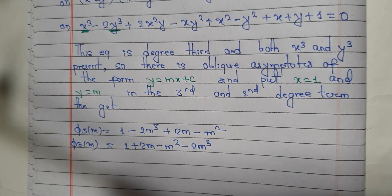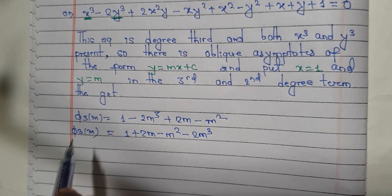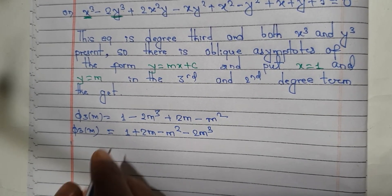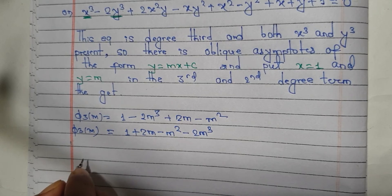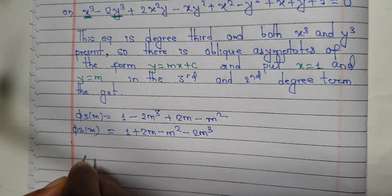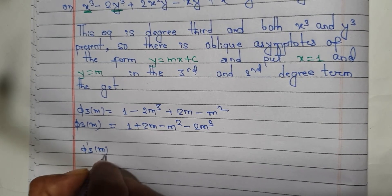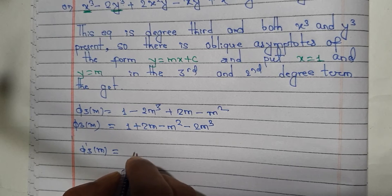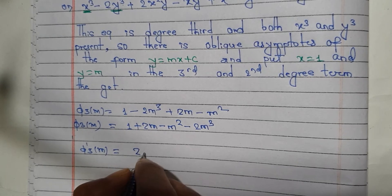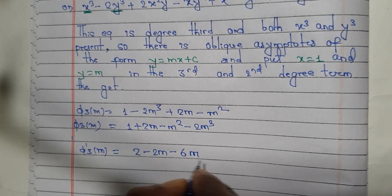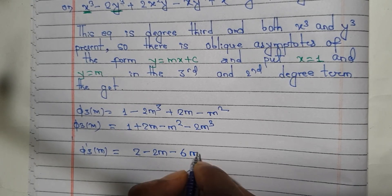We have a higher degree. We have a derivative. So: 1 plus 2m minus 2m minus 2m. This gives 1 plus 2m minus m squared minus 2m cubed.